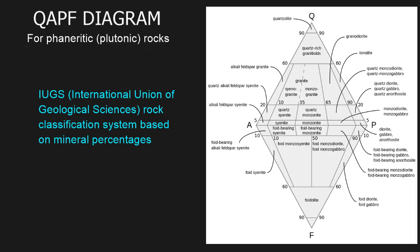An important thing to note here is that this particular diagram is for phaneritic rocks only. Phaneritic means the grains or minerals you can see with the naked eye, and it implies a plutonic or intrusive rock like granite that cooled within the earth at higher temperatures than at the surface. There are other diagrams for aphanitic rocks or pyroclastic rocks, but we're just going to focus on this right now for simplicity.